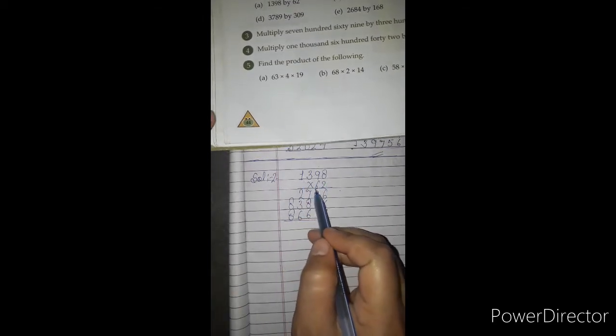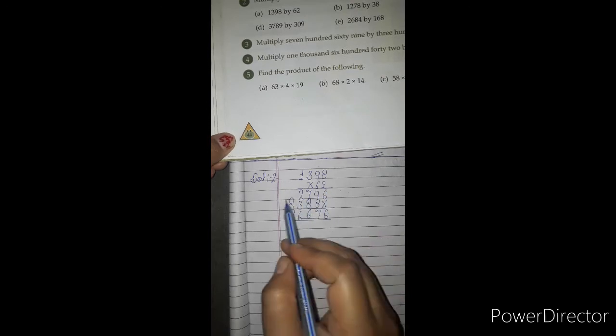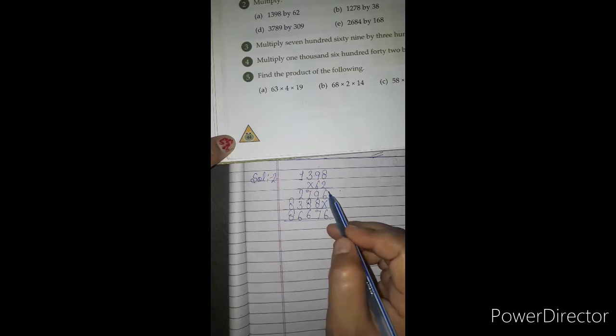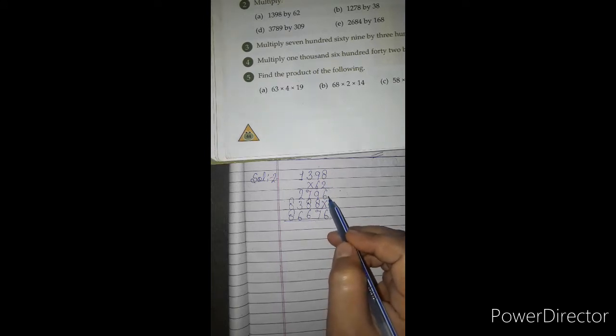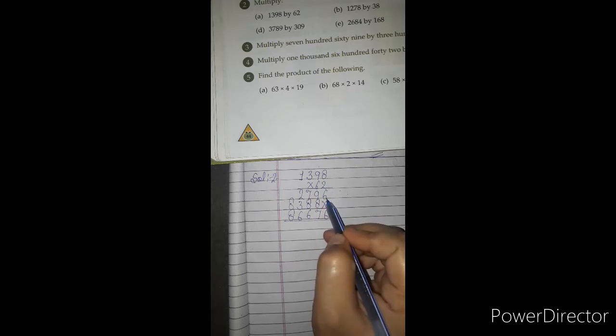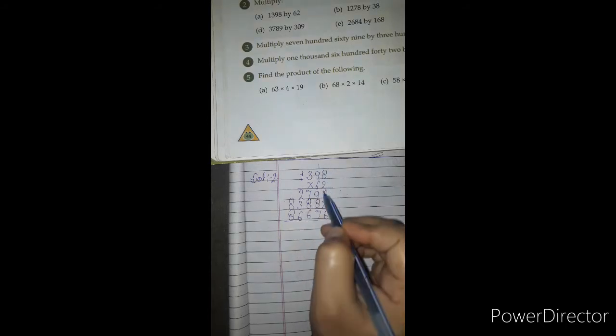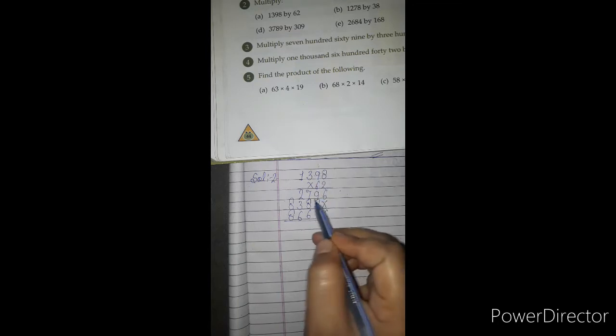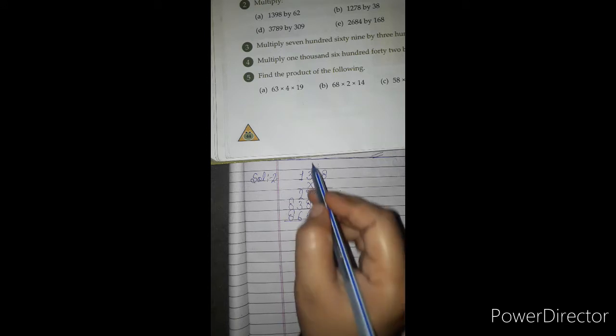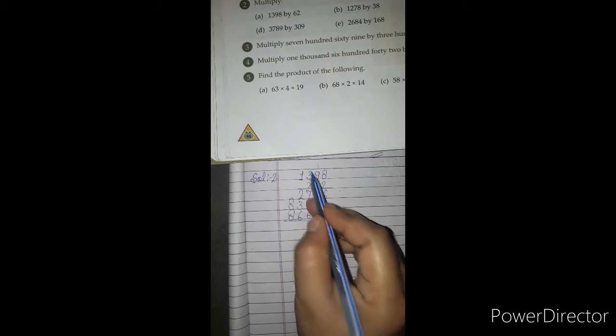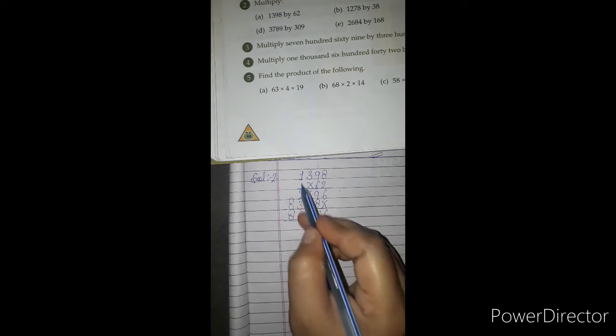Multiply 1398 by 62. Solution: 1398 into 62. When we multiply 8 from 2, then we get 16. 2 times 8 is 16, carry 1. 2 times 9 is 18, add 1 is 19, write 9, carry 1. 2 times 3 is 6, add 1 is 7.